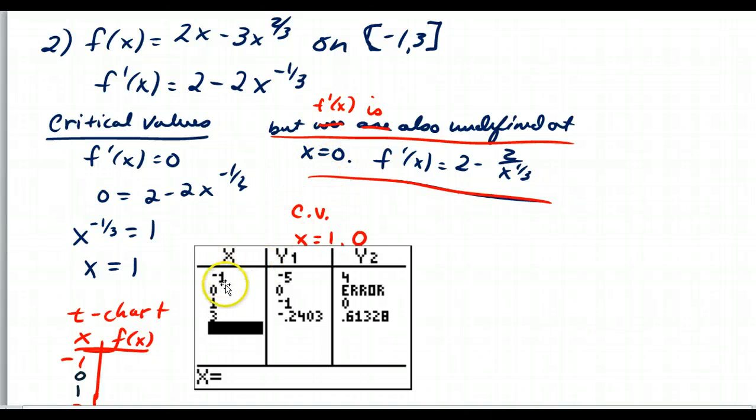So remember that we have to find both the times that the derivative is 0 and when it's undefined. So if we put this into a t-chart then, negative 1 and 3 are the endpoints and 0 and 1 are my critical values. This would be my lowest value here. So absolute min. And then my absolute max, ironically, is 0.